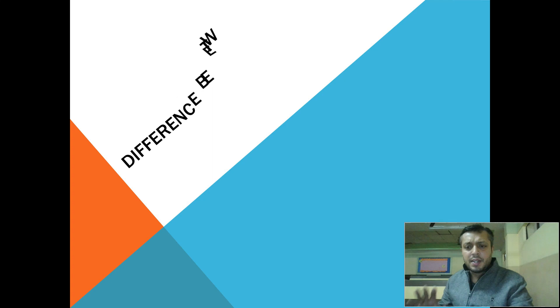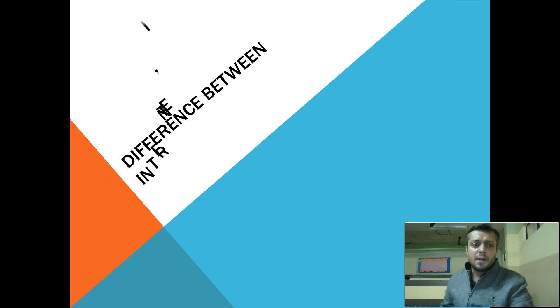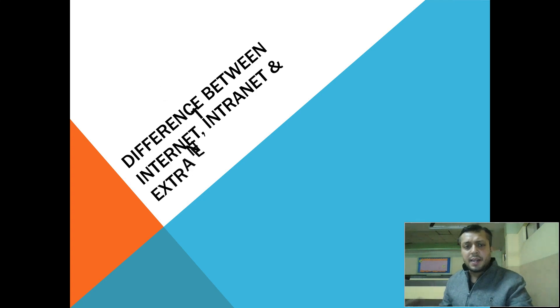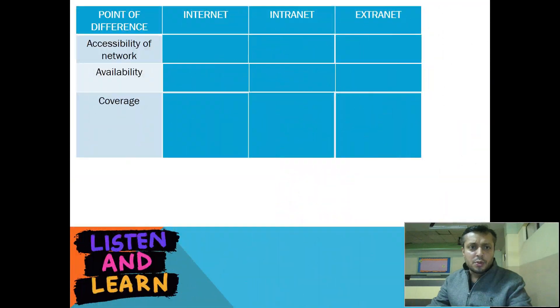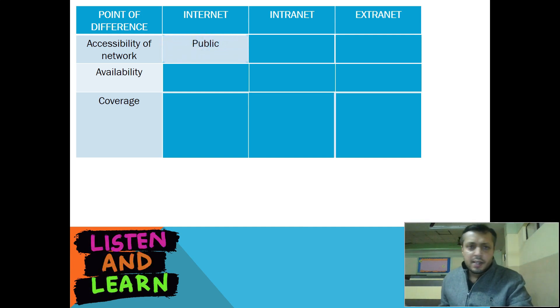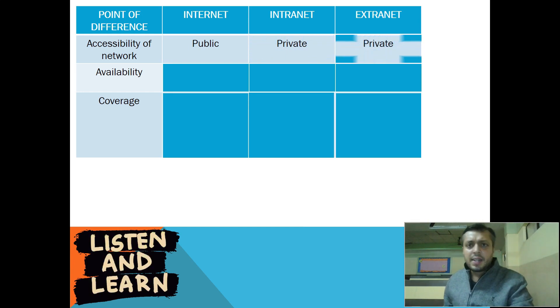The question arises: what is the difference between internet, intranet, and extranet? Through this tabular format, we will try to see the difference between the three. The first point of difference is accessibility of network. Internet is a public network accessible to all. However, intranet, just like extranet, are private networks.